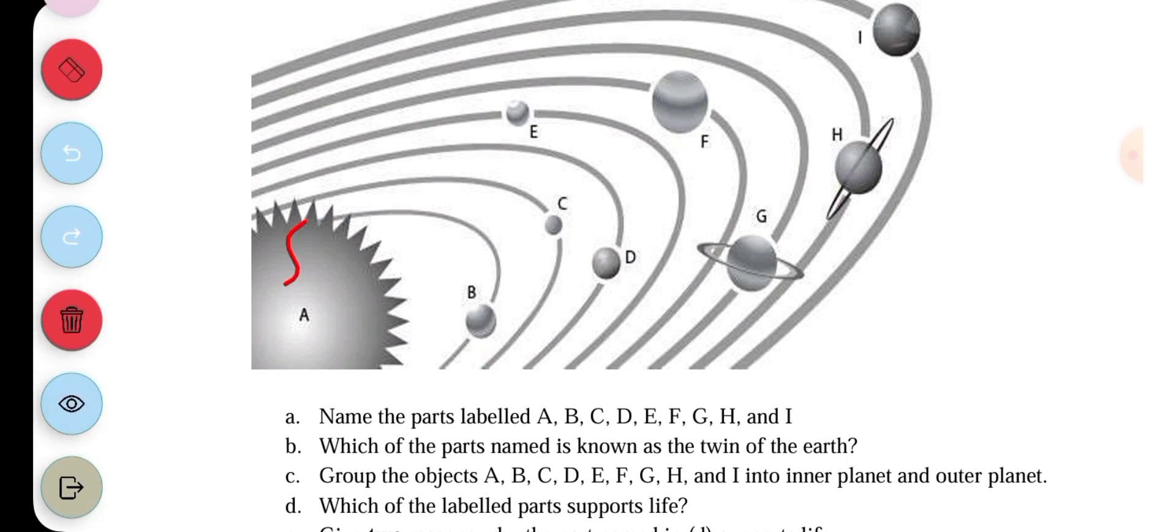So A here is the sun. We use a simple mnemonic that has to do with the arrangement of planets in the right order, from the sun to the last planet that is the farthest away.